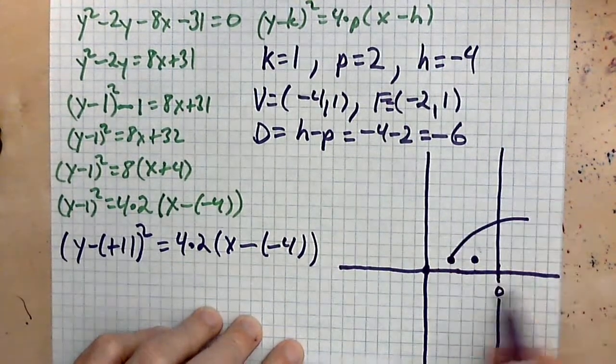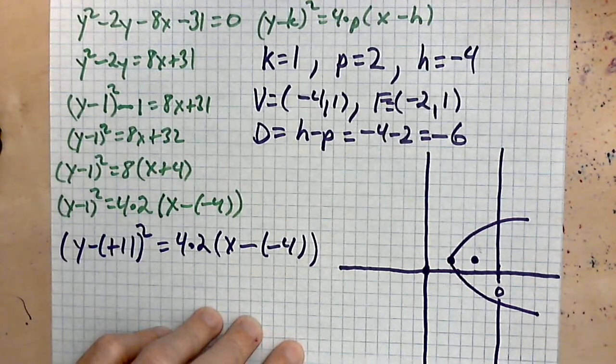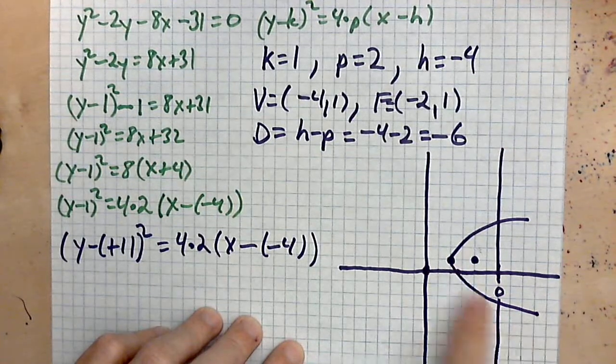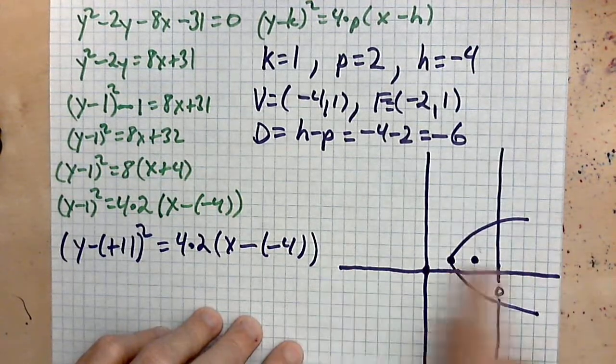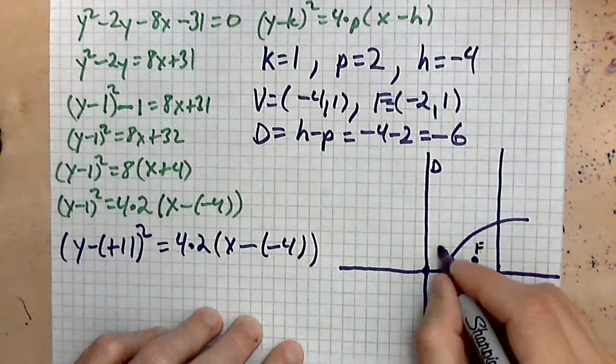And then roughly what we have perhaps is something that looks like this. So directrix, focus, vertex, parabola, y-axis, x-axis: D, F, V.